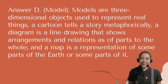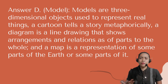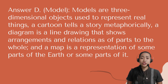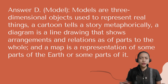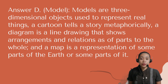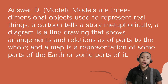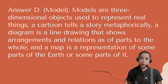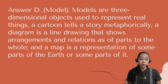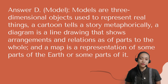The correct answer is D — Model. Models are three-dimensional objects used to represent real things. A cartoon tells a story metaphorically. A diagram is a line drawing showing arrangements and relations of parts of a whole. And a map is a representation of some parts of the Earth or some parts of it.